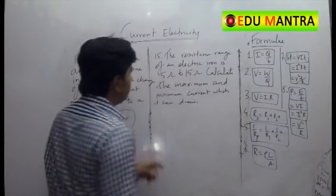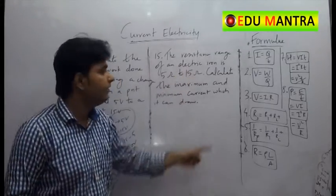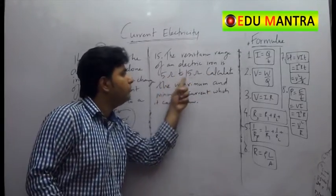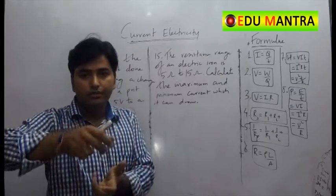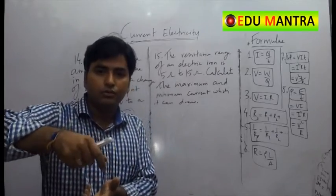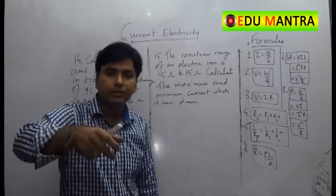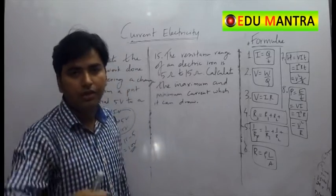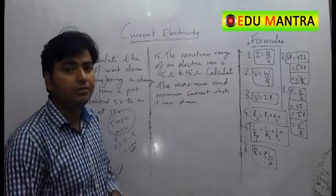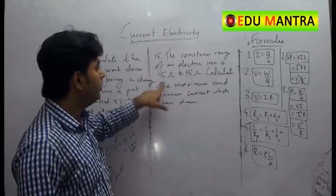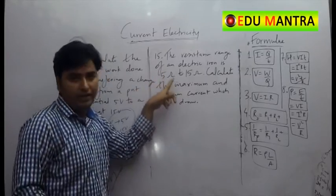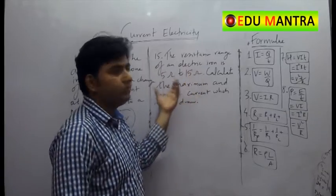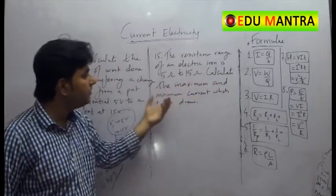The resistance range of electric iron is 5 ohm to 15 ohm. We know that the knob has a button which we rotate and its value changes and we increase or decrease the heat. So let the lowest resistance be 5 ohm and the highest resistance be 15 ohm. This is the range. Calculate the maximum and minimum current.